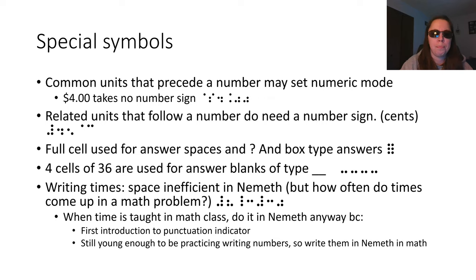To write times in braille like the time of day that it's 8:30 in the morning this is pretty space inefficient in braille. But that makes sense, how often do times come up in a math problem realistically. Not all that common because they're a different kind of number, they're a different base, we operate on them differently. But when time is taught in math class, if that's where it's being introduced in early elementary, then I do have my students write it in nemeth largely because it's a great way to introduce the punctuation indicator and that the punctuation indicator terminates our numeric mode. Students are generally still young enough at that point to be practicing writing their numerals so it makes sense to have them practice in math class writing these in nemeth. So to write a time it would be numeric indicator the hours punctuation indicator dot 25 for the colon numeric indicator and then the number of minutes.